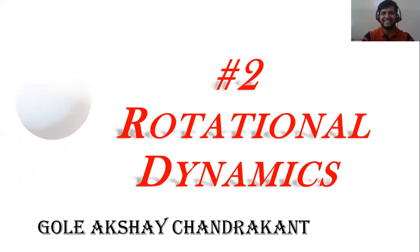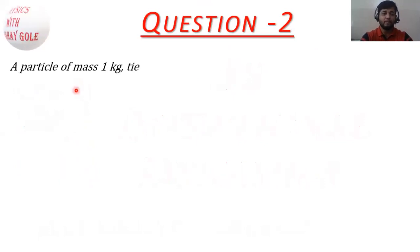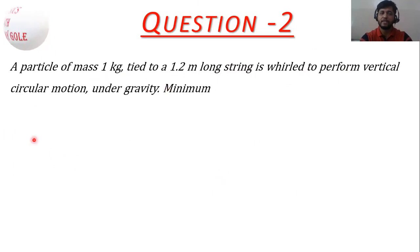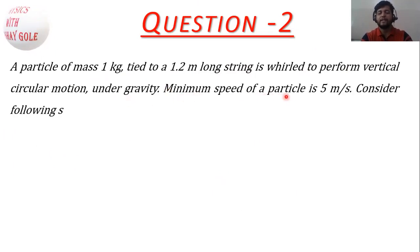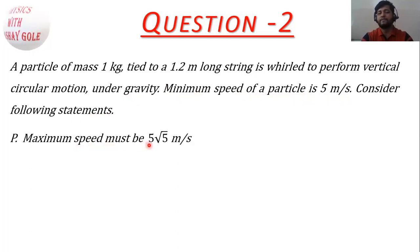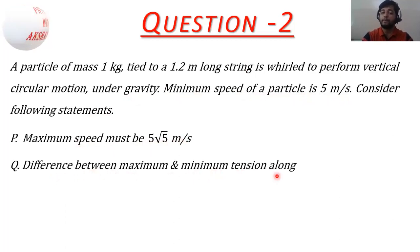Now, what is the question? A particle of mass 1 kg tied to a 1.2 meter long string is set to perform a vertical circular motion under gravity. The minimum speed of the particle is 5 meters per second. Consider the following statements: Statement P is that the maximum speed must be 5√5 meters per second. Statement Q is that the difference between the maximum and minimum tension along the string is 60 Newton.